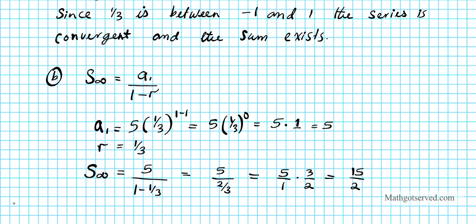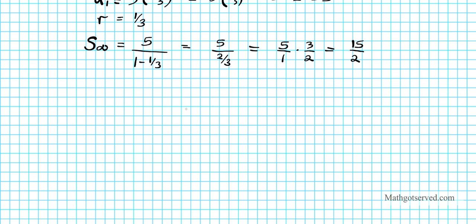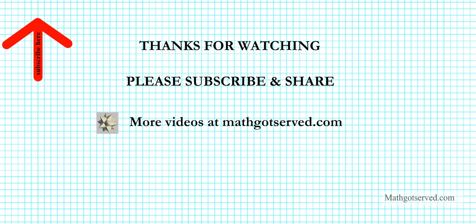In conclusion, the sum of the infinite geometric series from n equals 1 to infinity of 5 times 1/3 to the n minus 1 is equal to 15/2. Thanks so much for taking the time to watch this presentation. Feel free to subscribe to my channel, post a comment to let me know what you think, and more videos can be found on mad.serv.com. Thanks again and have a wonderful day.